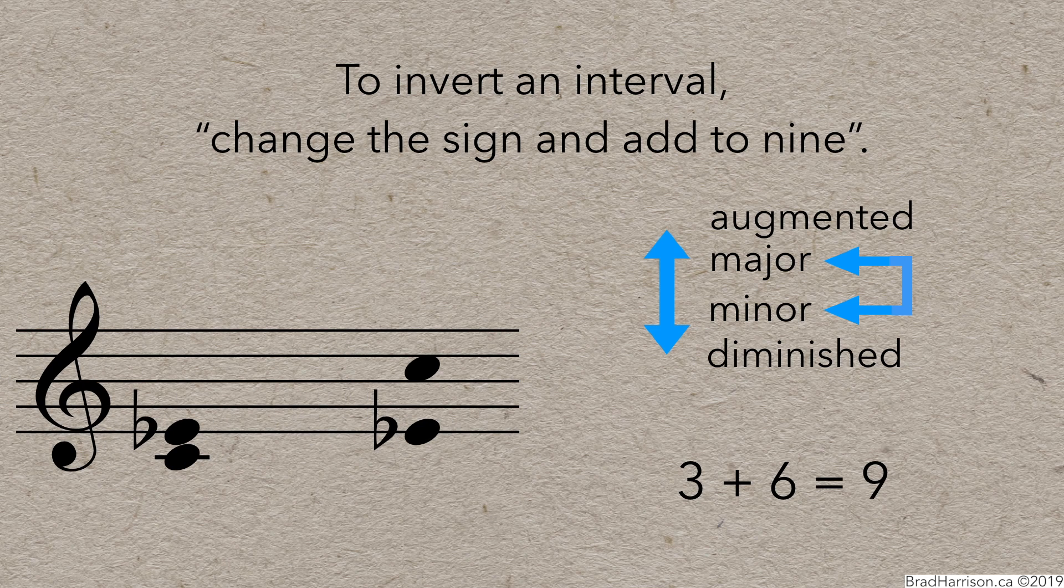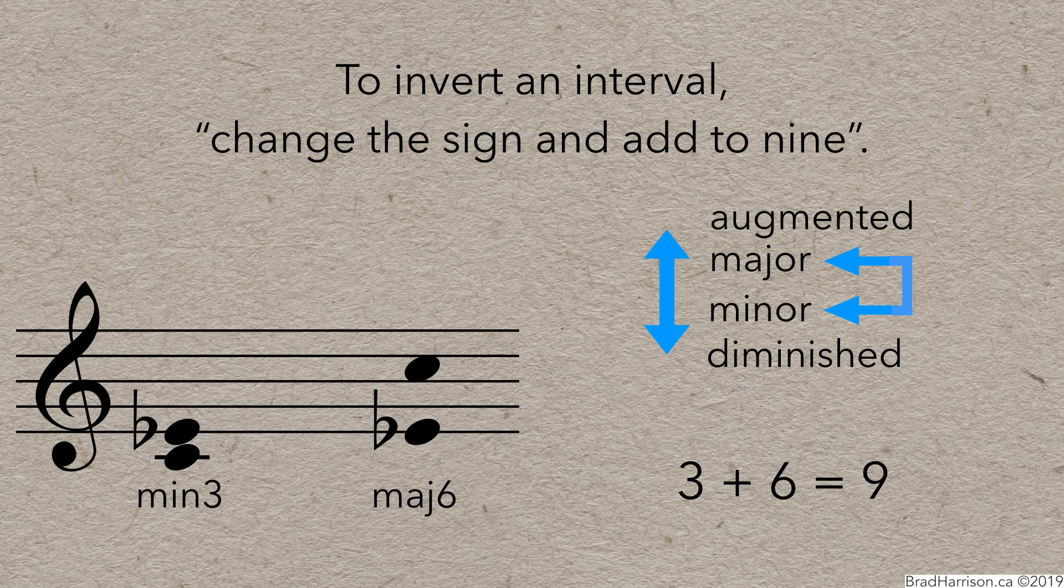C to E flat is a minor 3rd. If we flip the C up the octave, change the sign, and add to 9, you'll see that this is a major 6th.